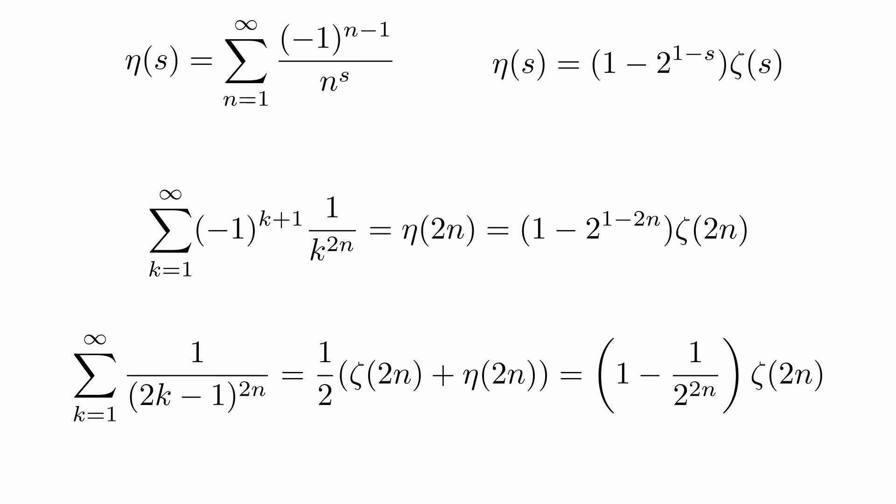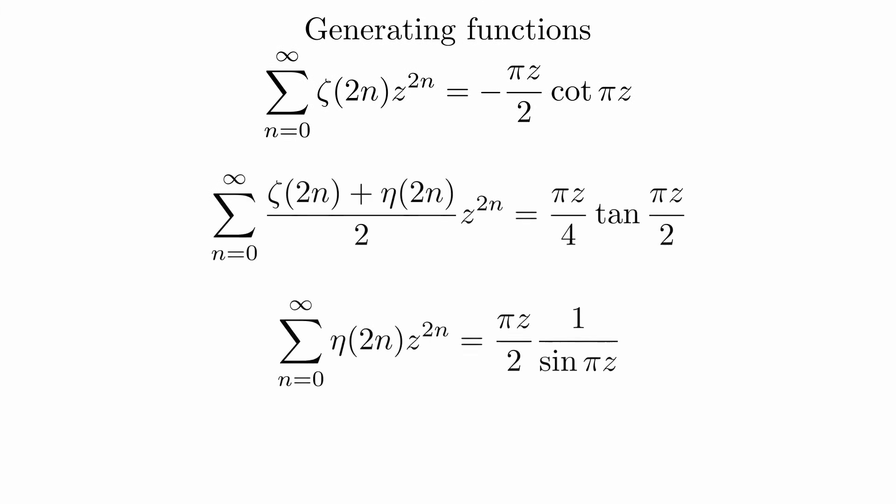Here we also could have found the values by analyzing the generating function. Like before, there is a trigonometric function involved. It turns out, one over cosine is also a generating function of some special infinite sum.